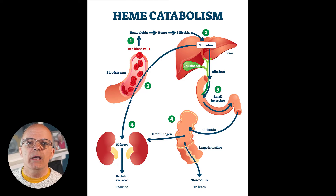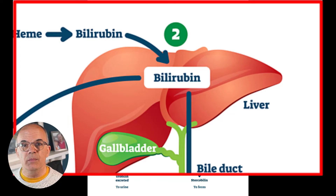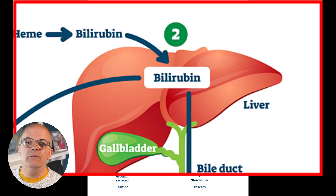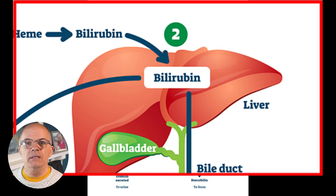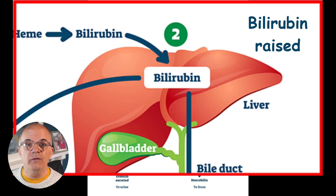Now let us move on to intra-hepatic causes of a rise in bilirubin. This is where there is damage to the liver itself, which means that it is less able to add the glucuronic acid it needs in order to convert the unconjugated bilirubin — fat soluble — to conjugated bilirubin, which is water soluble. Due to the damage of the liver there will also be release of aminotransferases: alanine transferase and aspartate transferase. Aminotransferases normally take part in the conversion of amino acids within the hepatocytes of the liver. So with an intra-hepatic cause, you would also expect to see a rise in both of the transferases.